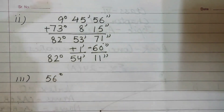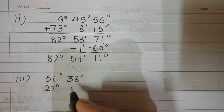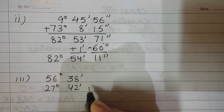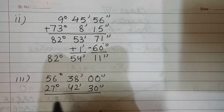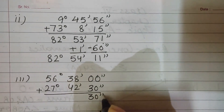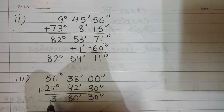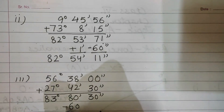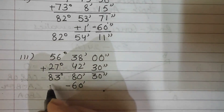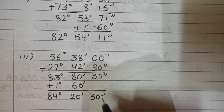Third part: 56 degrees 38 minutes added to 27 degrees 42 minutes 30 seconds — here no seconds are given so write 0 seconds. Adding: 30 seconds, 80 minutes, and 83 degrees. Since 80 minutes exceeds 60, subtract 60 minutes and add 1 degree. Final answer is 84 degrees 20 minutes 30 seconds.